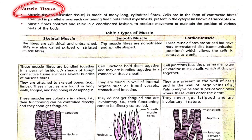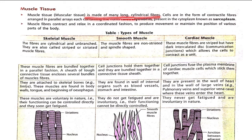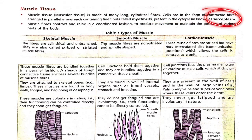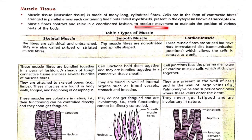Animal tissue: muscle tissue is made of many long and cylindrical fiber cells in the form of contractile fibers, arranged in a parallel array, each containing fine fibers called myofibrils. These are present in the cytoplasm known as sarcoplasm. Muscle fibers contract and relax in a coordinated fashion to produce movements or maintain the position of various parts of the body.